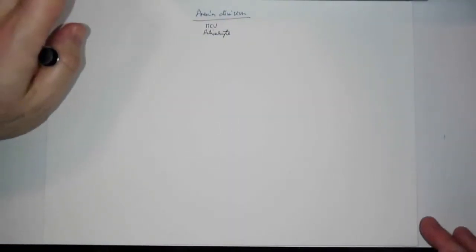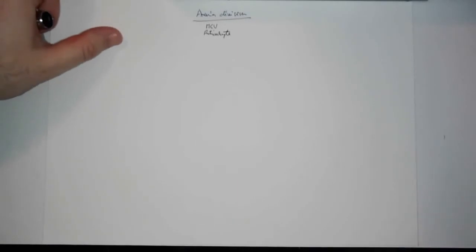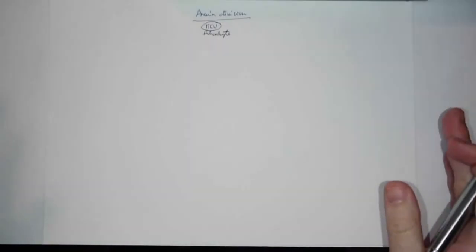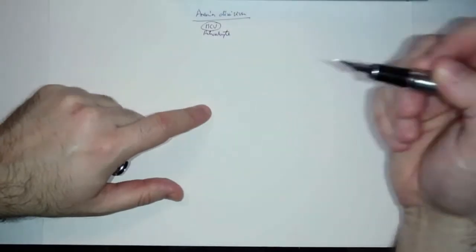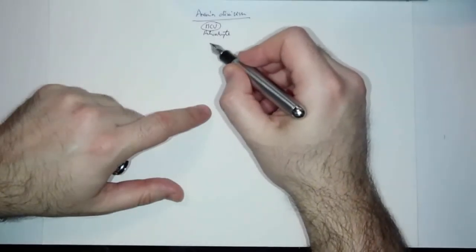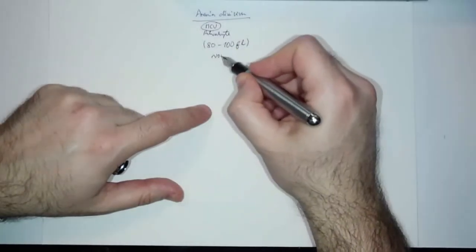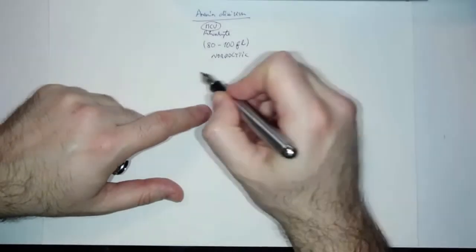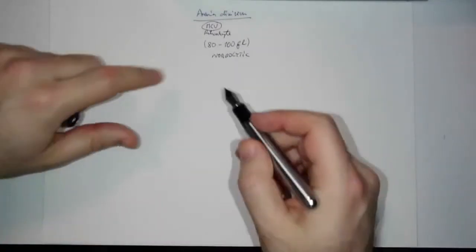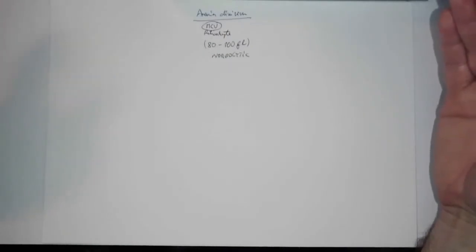The reticulocyte percentage is normally about 2%. If it's below 2%, that's abnormal. The mean corpuscular volume really helps us divide diseases into three groups. The first is normocytic anemia, which means normal erythrocyte volume — and the normal range is 80 to 100 femtoliters. In normocytic anemia, the reticulocyte count helps us divide it even further.